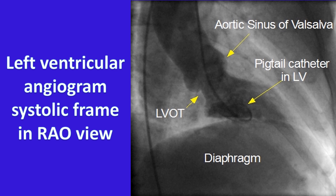Left ventricular angiogram in the RAO view is usually taken to check the regional wall motion, left ventricular function, and mitral regurgitation if any.